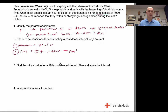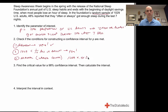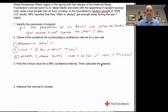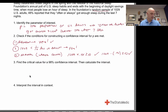Condition two: is the 10% condition met? Is 1,029 less than one-tenth of all US adults? Yes, it is. Condition three: large counts — is 1,029 × 0.48 ≥ 10? Yes. Is 1,029 × 0.52 ≥ 10? Yes. All conditions are met, so we can construct the confidence interval.